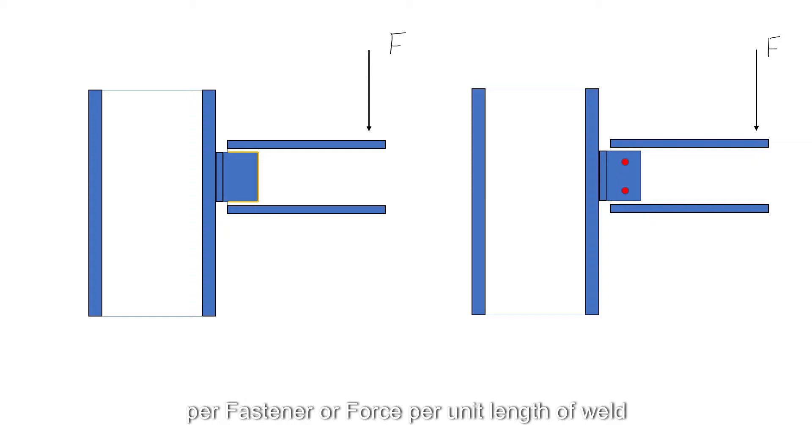Once the force per fastener or force per unit length of weld has been determined, it is a simple matter to evaluate the adequacy of the connection. This determination is the basis for the two major categories of connections.